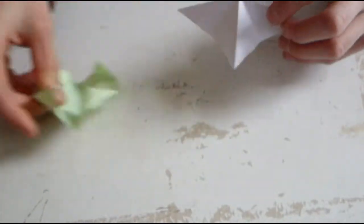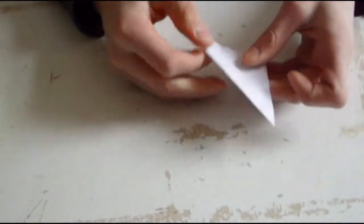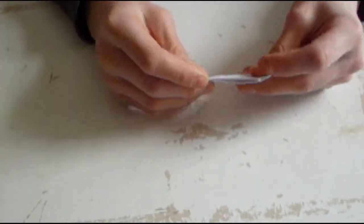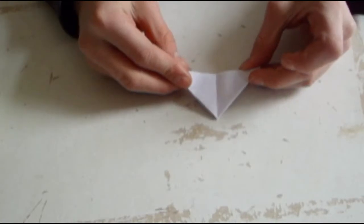At first this: fold two diagonals, take two points and make a waterbomb base.